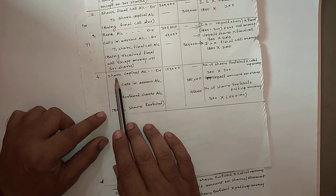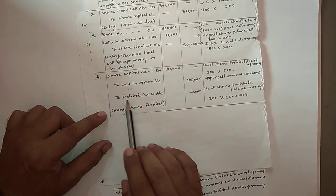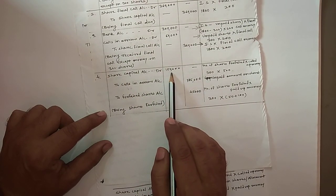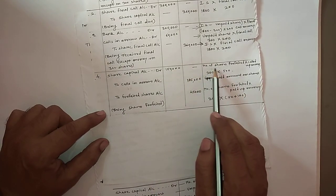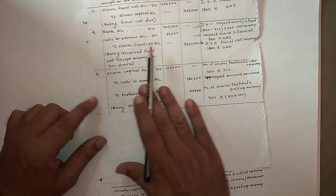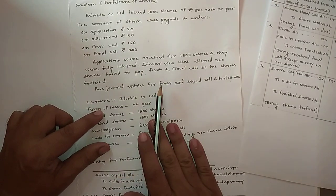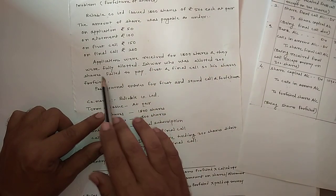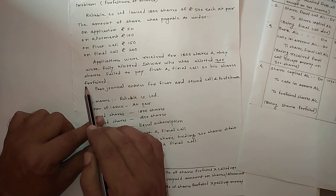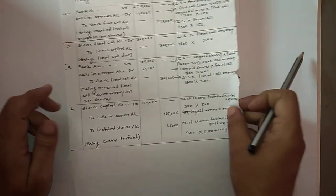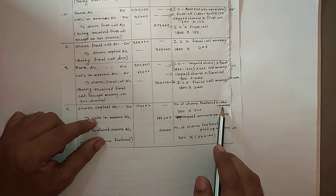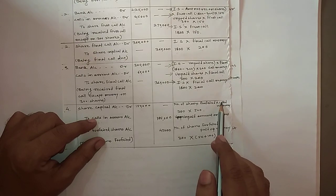Now the forfeiture entry: Share Capital Account debit, to Calls in Arrears Account, to Forfeited Shares Account. The Share Capital Account debit amount is rupees 1,50,000. This is calculated as number of shares forfeited multiplied by called-up money. The shareholder allotted 300 shares failed to pay first and final call, so 300 shares are forfeited by the company.